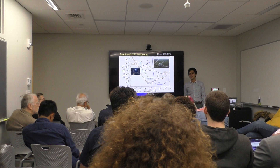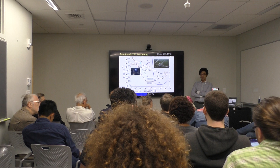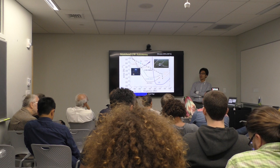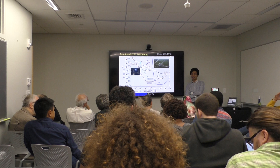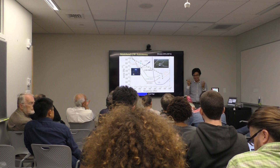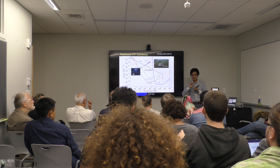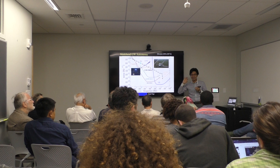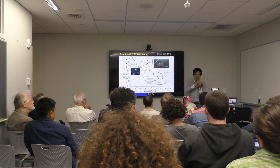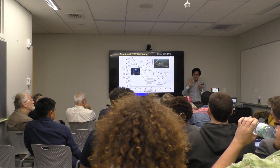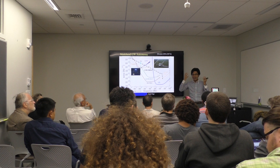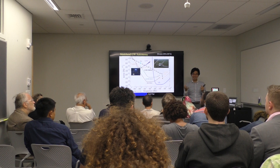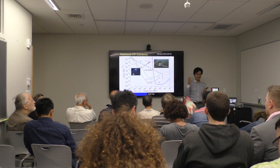Regarding constraining negative post-Newtonian orders with solar system experiments: in some cases yes, but it depends on the theory. Negative post-Newtonian corrections are typically activated by scalar charges — if you have scalar charges, there will be scalar dipole radiation, which enters at lower order in multipole expansion, hence negative post-Newtonian order. To have large scalar charges you need compact objects, so for these kinds of theories solar system experiments are not useful, and binary pulsar observations are more useful.